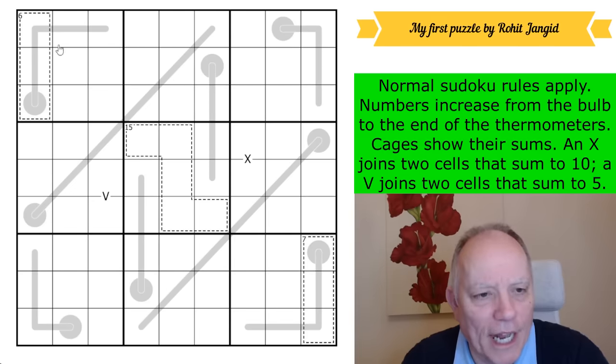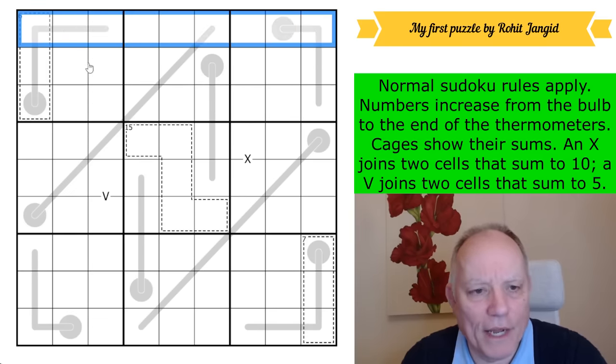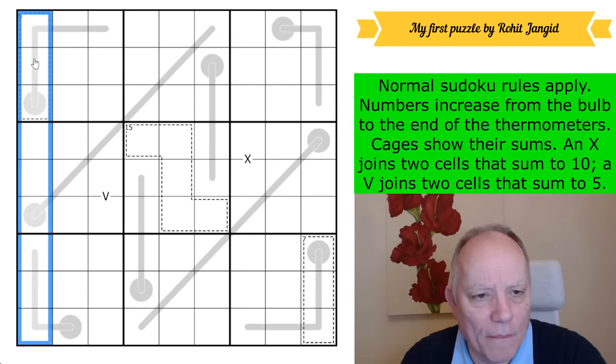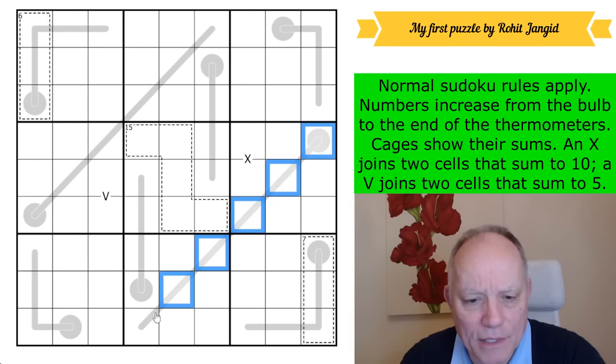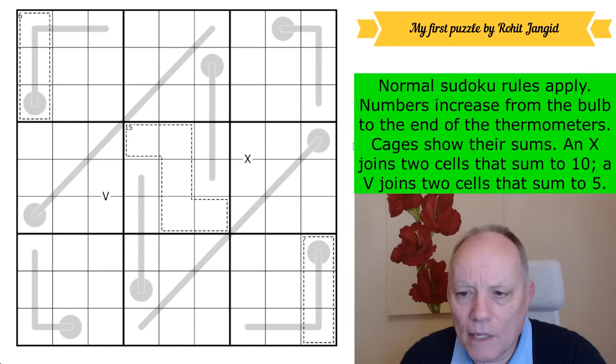The first link is to this very approachable puzzle, my first puzzle by Rohit Jangit. The rules are as follows: normal Sudoku rules apply, so we'll be putting one to nine in every row, every column, and every three by three box. Numbers increase from the bulb to the end of thermometers, so we must go up as we go each step along a thermometer. Cages show their sums. An X joins two cells that sum to 10, and a V joins two cells that sum to five. It's a very pretty, visually symmetric puzzle.